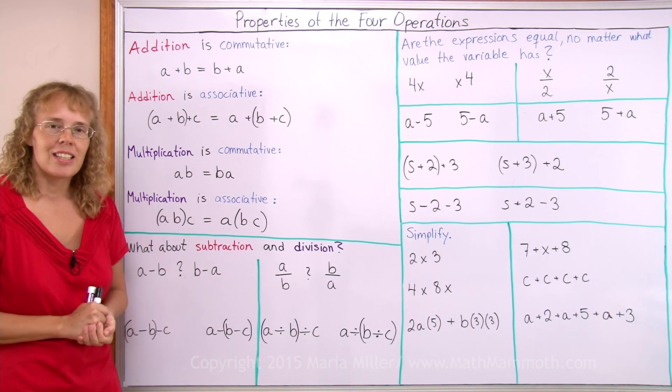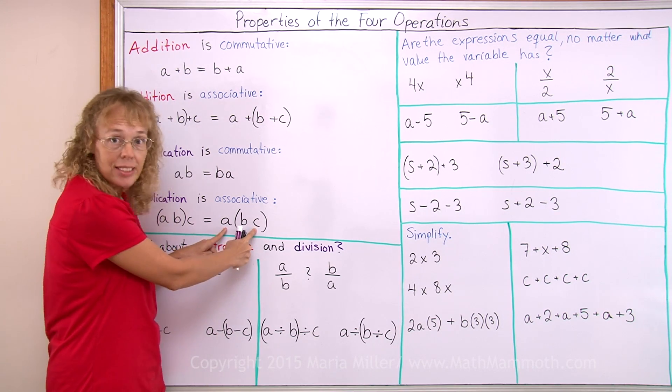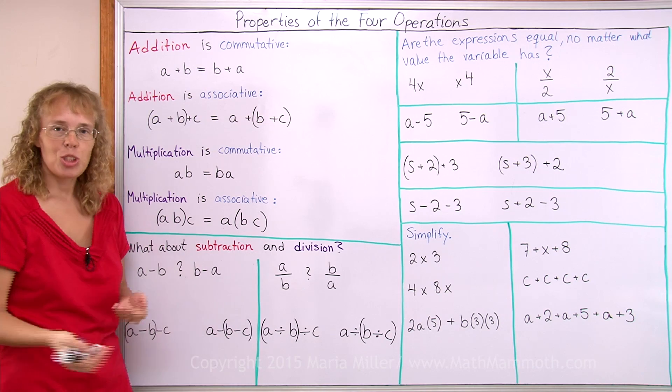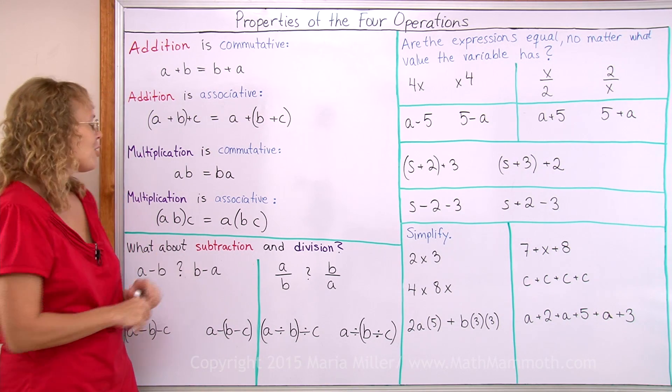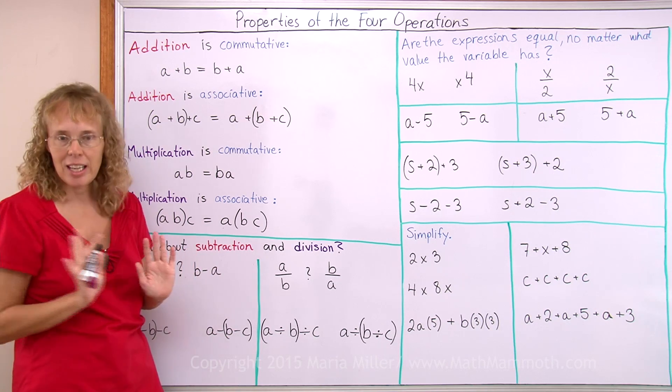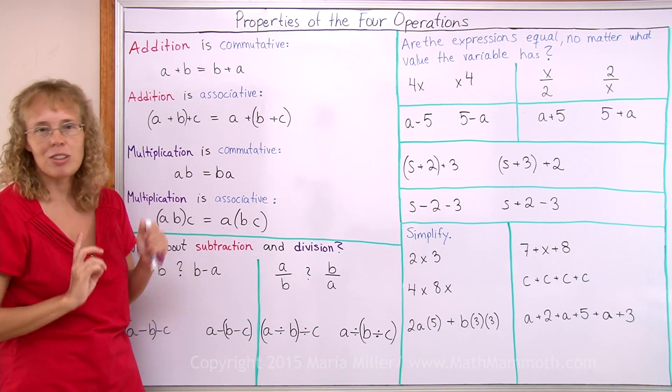Now, you might ask why does it not say anything about multiplying A and C first and then by B. That is true also. You could multiply in that order too. No problem. You can multiply these three numbers in any order. If you have four or five or six numbers, you can multiply them in any order you wish.